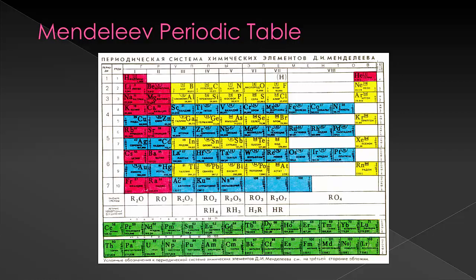So along came a guy named Mosley who figured out that actually it should have been designed based on atomic number rather than mass. So the table was rearranged based on this to give us the periodic table that we know today.